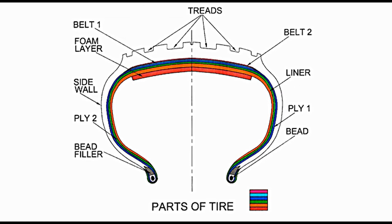Liner. It forms a layer in the tyre structure and can be noticed as the innermost layer, shown in orange colour. It is made of rubber compound and contributes to retaining inflation pressure.